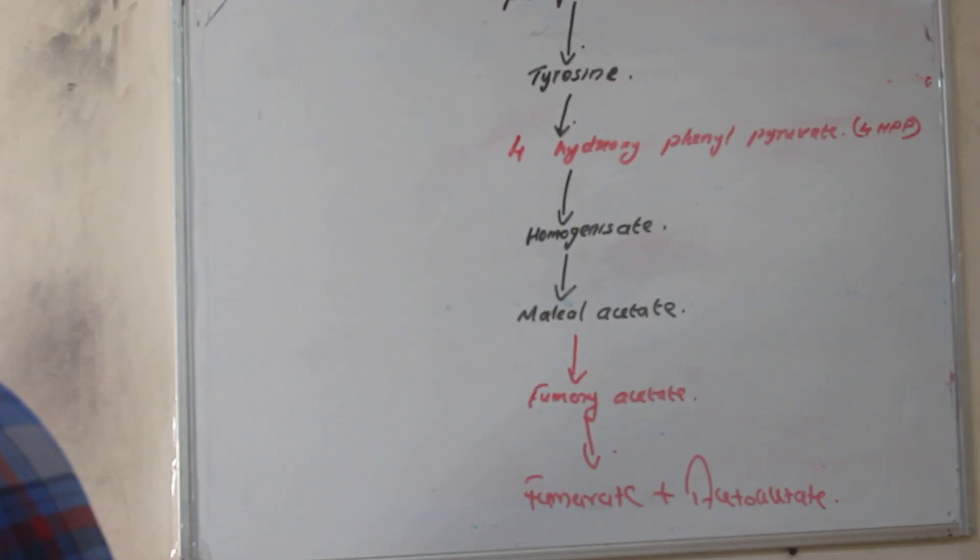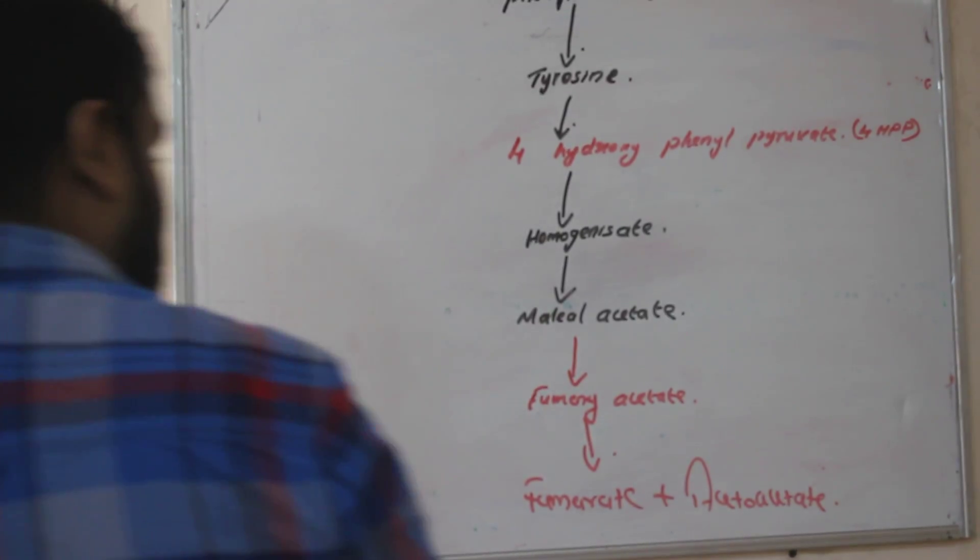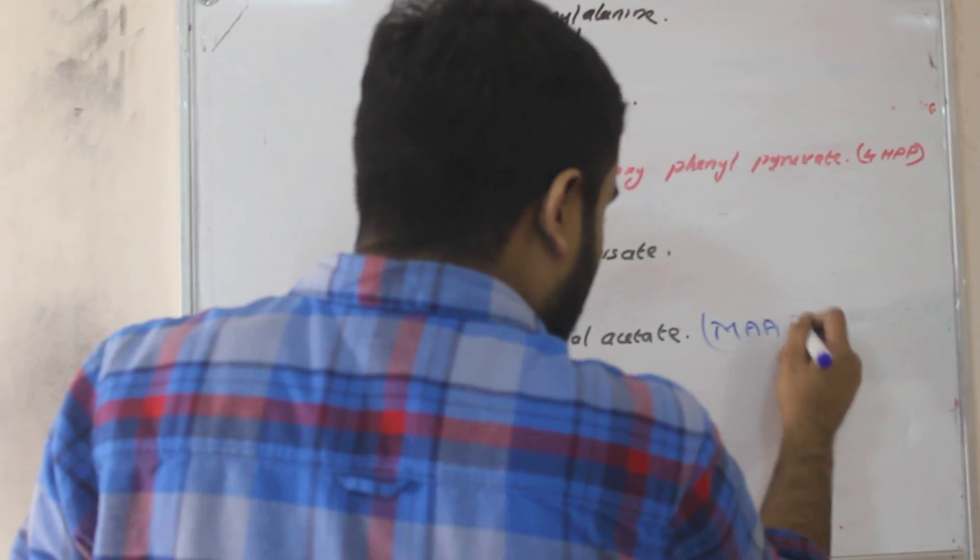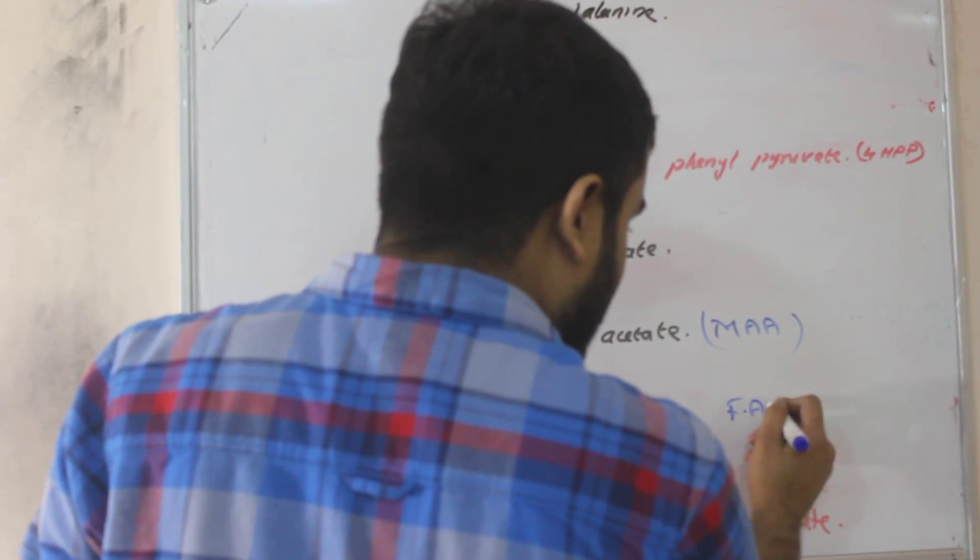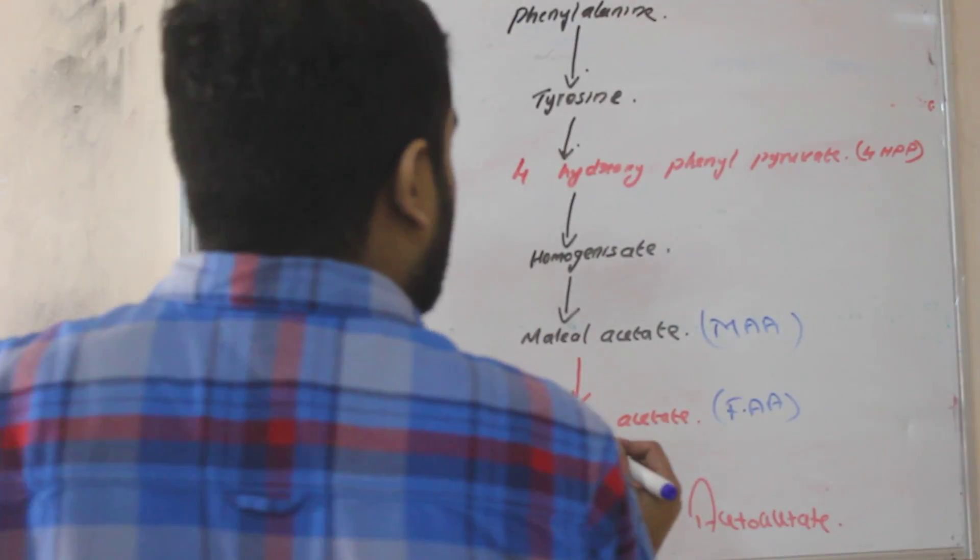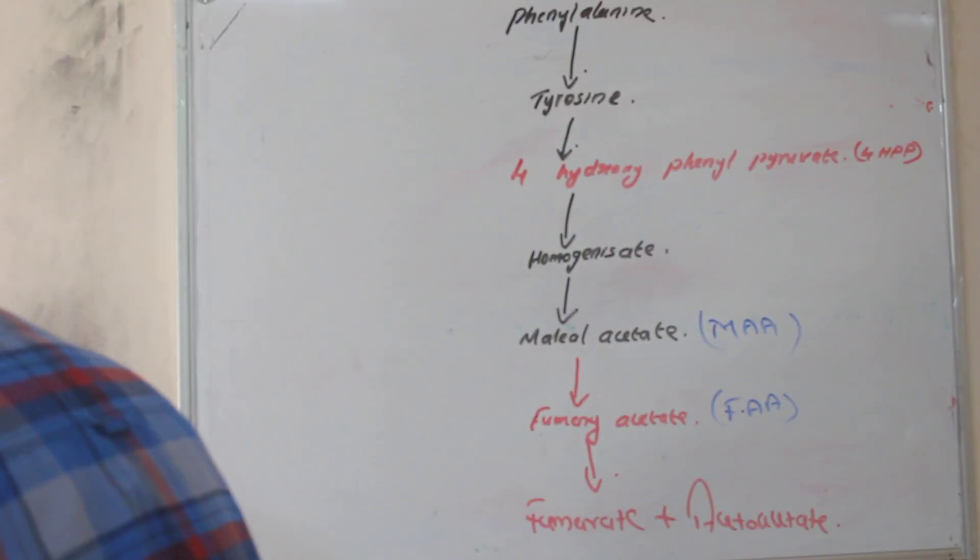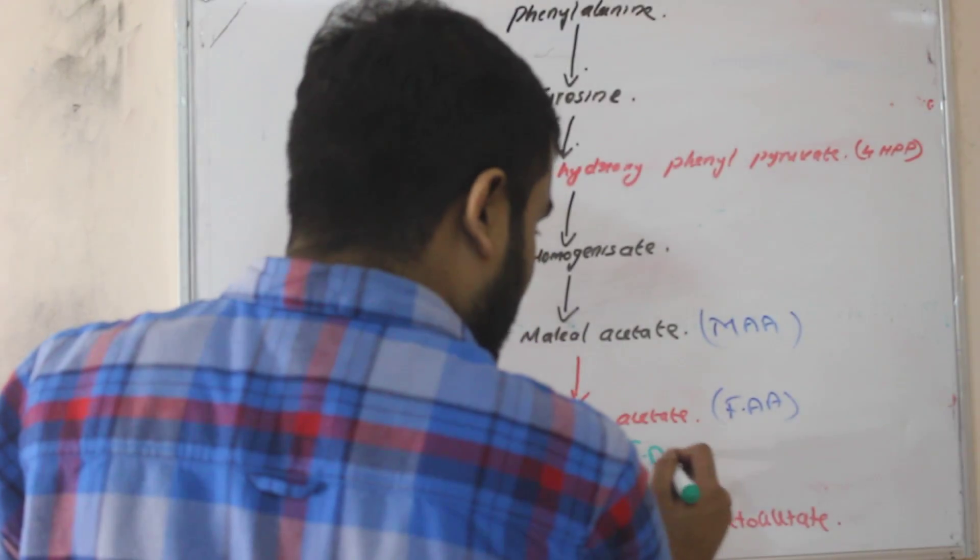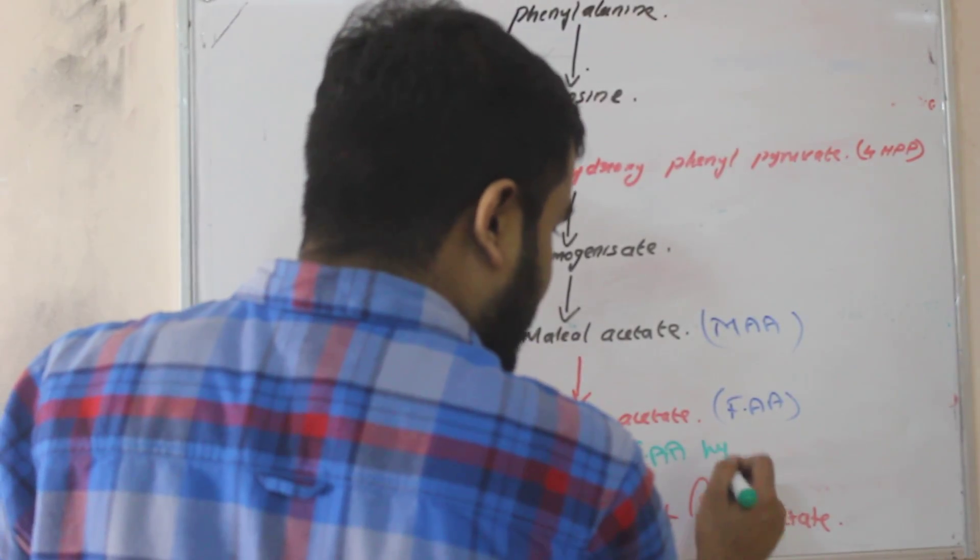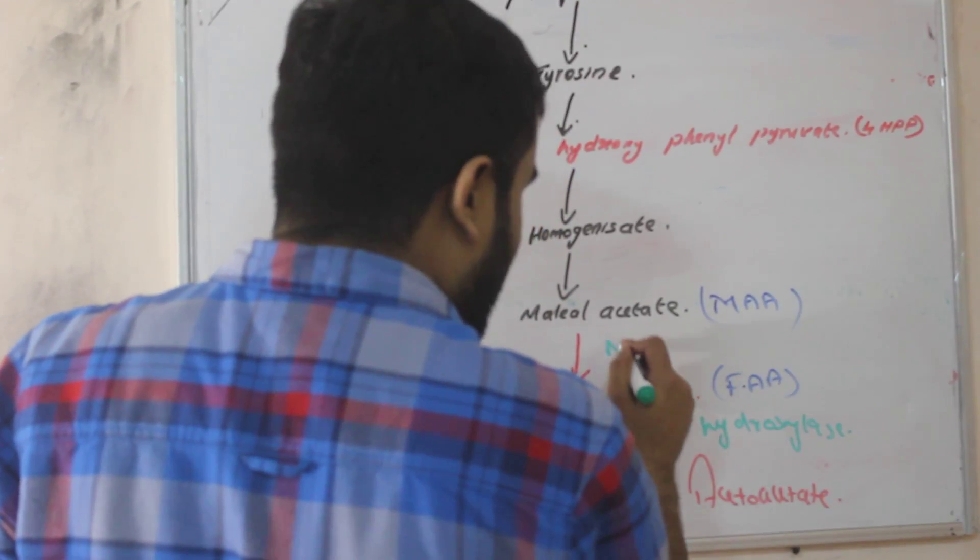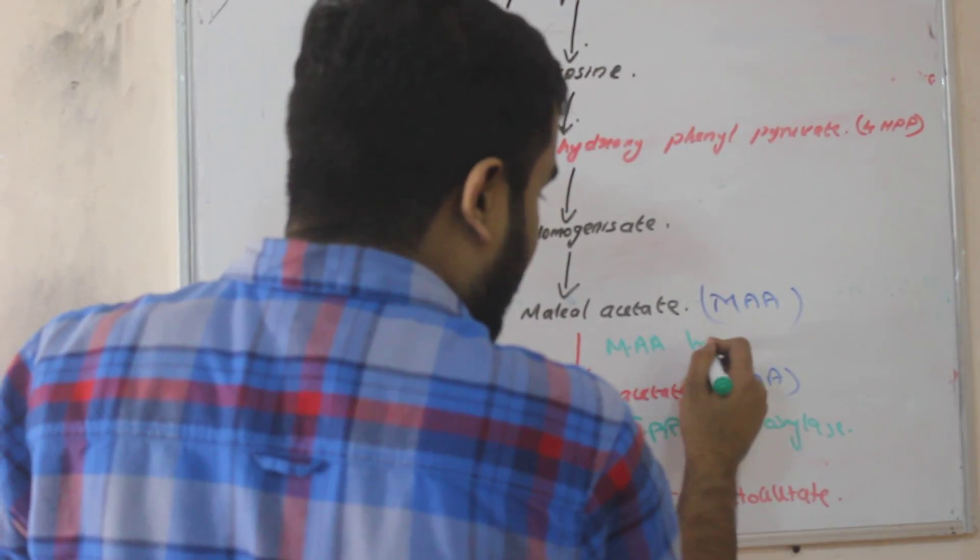Now we will see what are the enzymes. You can represent maleoacetate as MAA. This one is FAA. Now we will see what is the enzyme taking part. Here it is FAA, that is fumarylacetate hydroxylase. Here it is MAA hydroxylase.